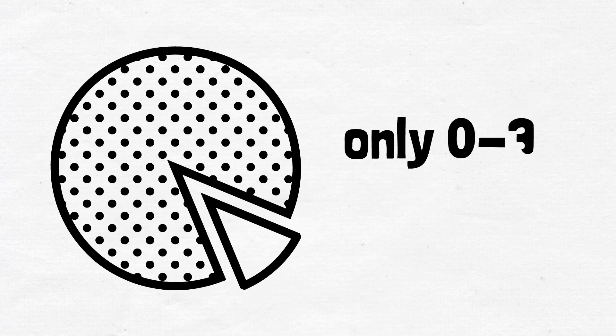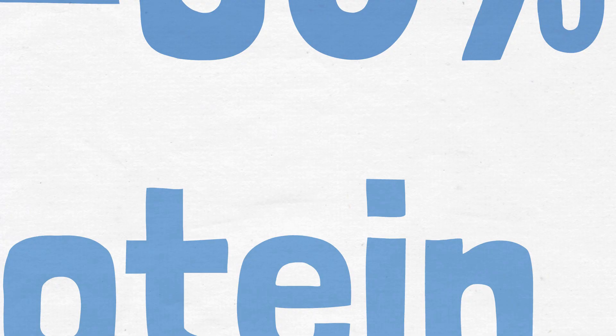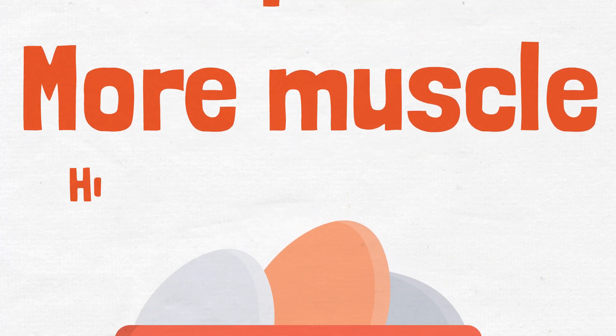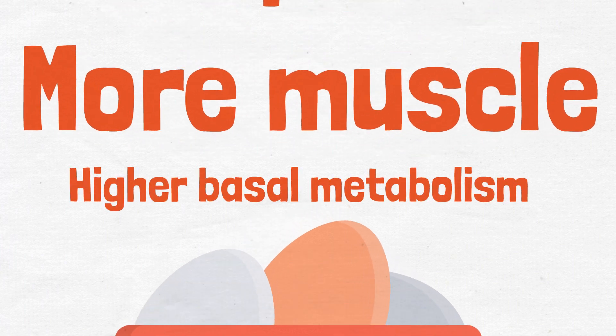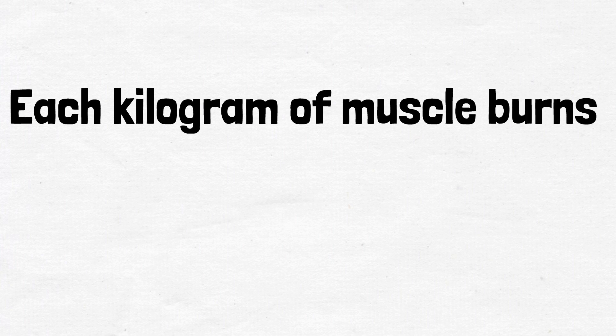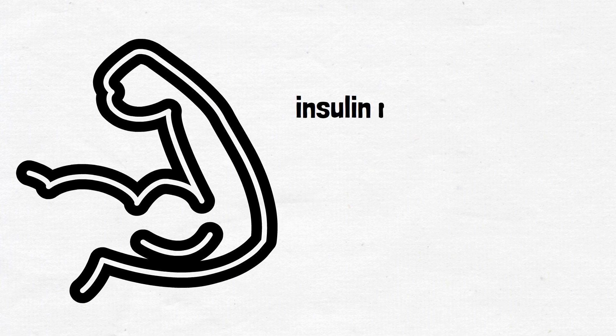Consuming enough protein also helps build and maintain muscles, and the more muscle you have, the higher your basal metabolism. Each kilogram of muscle burns 10 to 15 calories per day. But not only that—having more muscles reduces insulin resistance and your body can use glucose better.